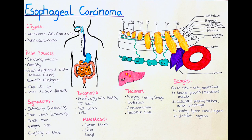Esophageal cancer can spread to nearby lymph nodes in the chest and abdomen, as well as to distant lymph nodes throughout the body. The liver is also a common site of metastases, as blood from the esophagus drains directly into the liver through the portal vein. The lungs are another common site of metastases, as cancer cells can travel through the bloodstream to the lungs. Other organs that may be affected include the bones, brain, and adrenal glands, though metastases to these sites are less common.